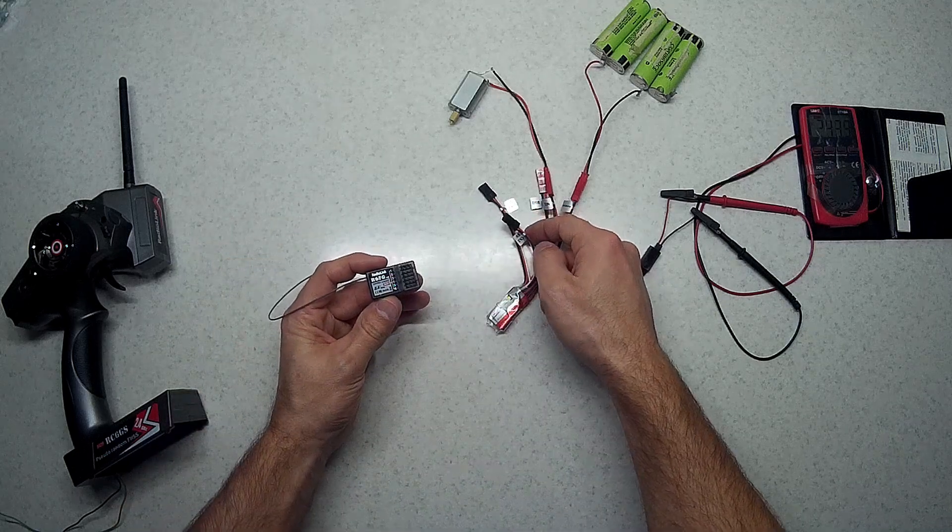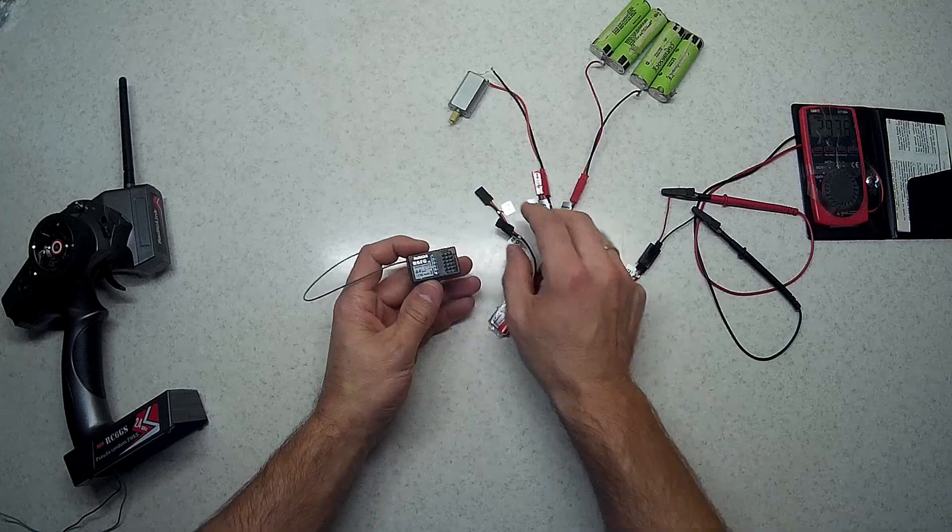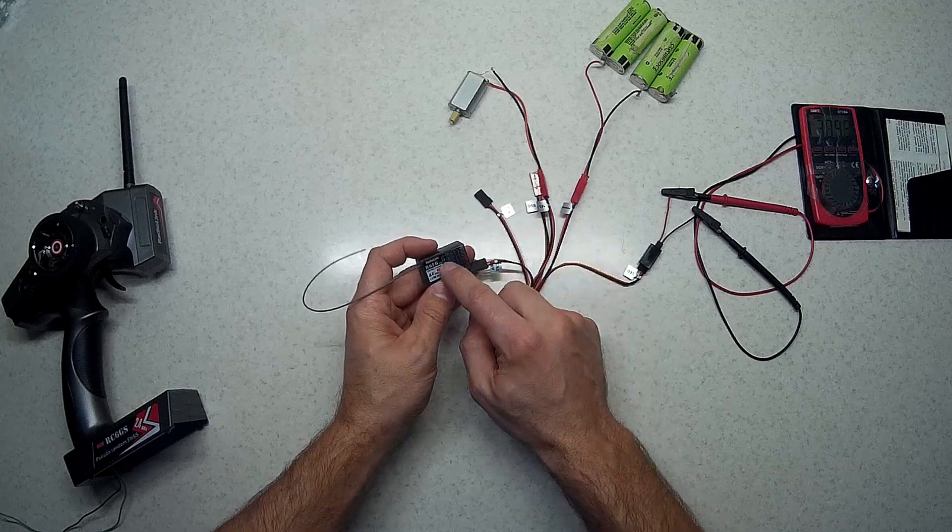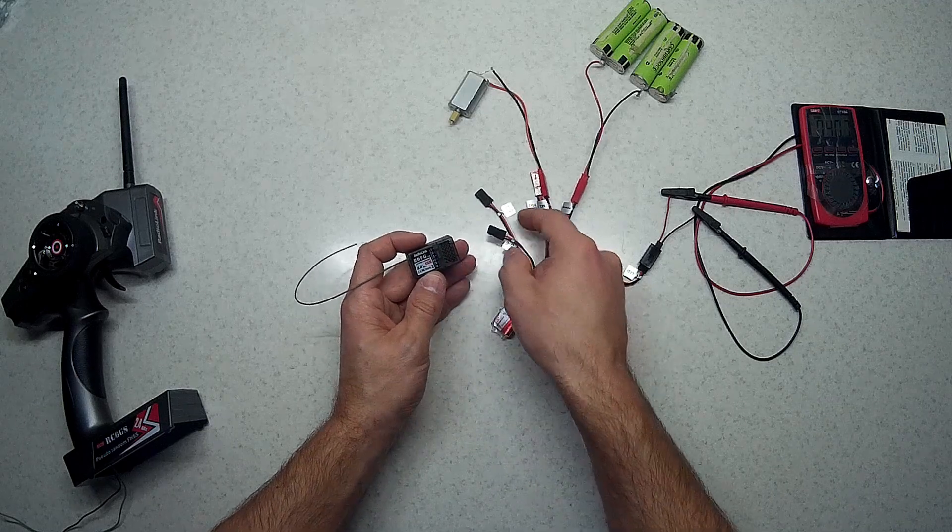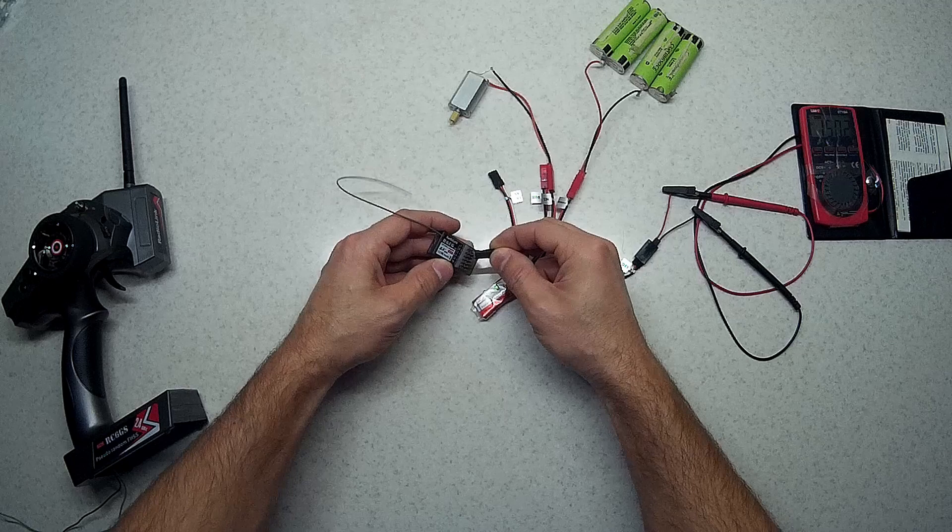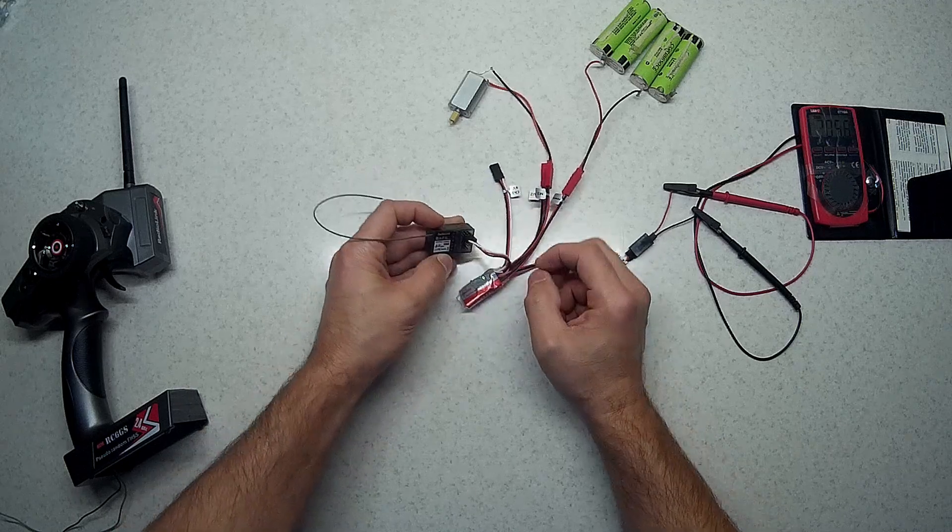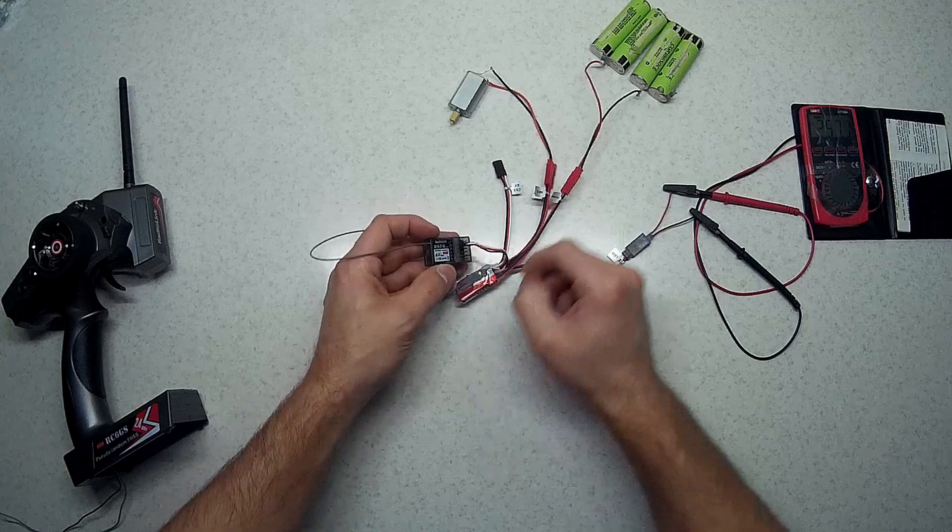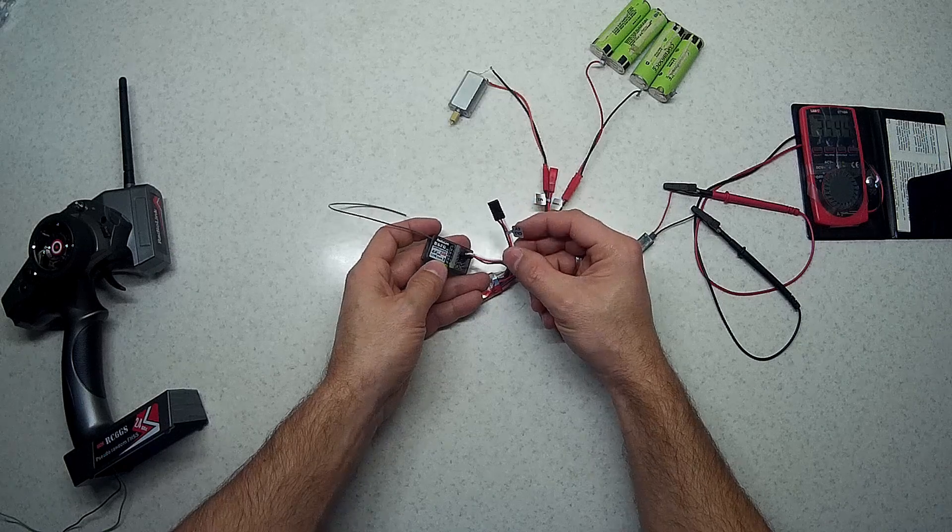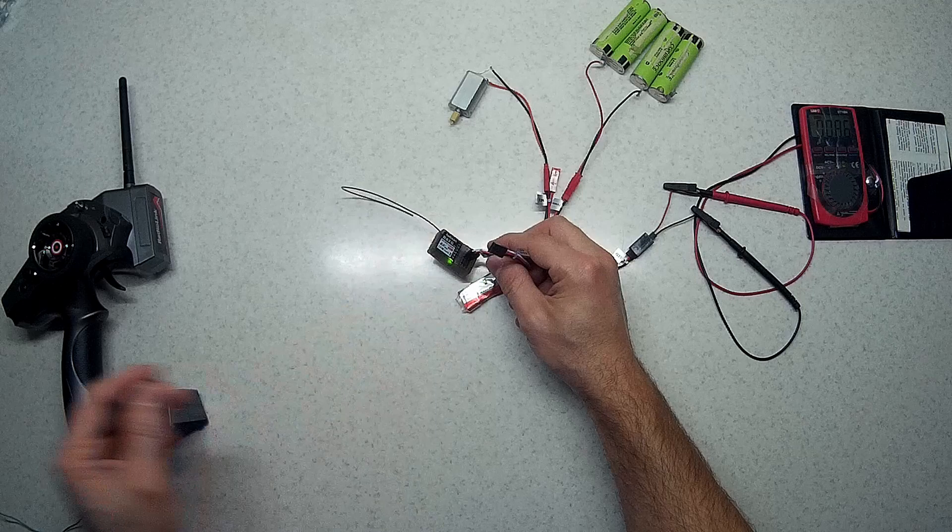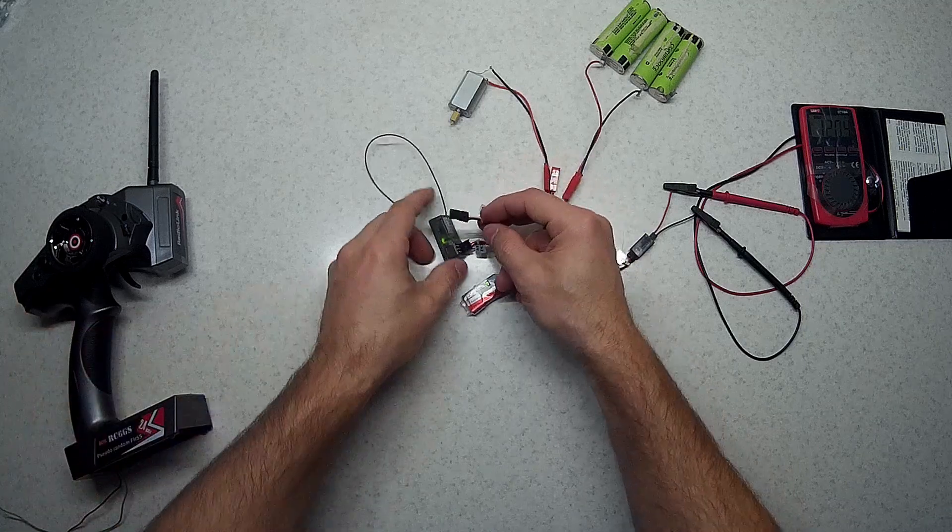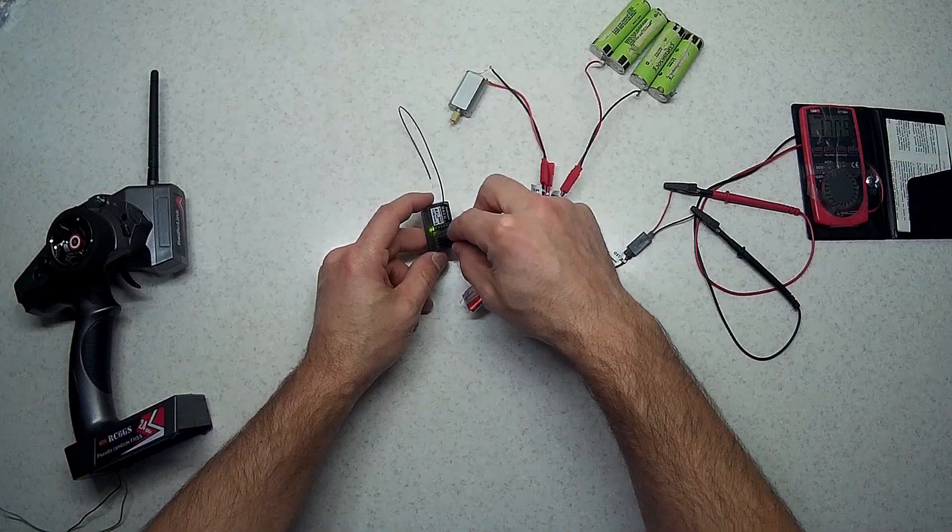And channel 2, we'll need to connect to channel 2 here. In this particular receiver the ground is the last one. So we get the black wire and put it into the ground. And the lights cable, I will connect to channel number 5, because I'm gonna drive it through this switch.